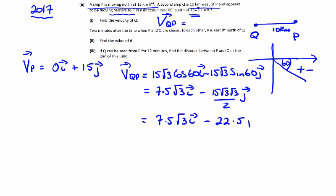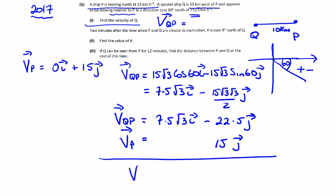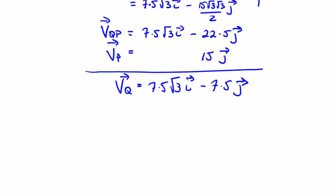Which is 22.5 in the j direction. Velocity of Q relative to P. Now we want the velocity of Q, so we have to add these two together. Just write the velocity of P underneath, 15j, and it gives us the velocity of Q to be 7.5√3 in the i direction and minus 7.5 in the j direction.